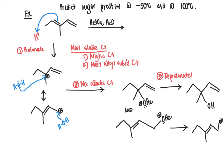So now we need to predict which of these products is going to dominate at minus 50 degrees, and which is going to dominate at 100 degrees. So at minus 50 degrees, reaction carried out in the deep freeze, low temperatures favor kinetic control.